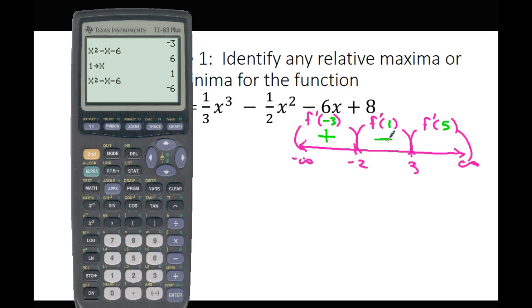Try the last test point using the calculator: store your value, push Second, Enter until you bring your function back, then Enter. For f prime of 5, you should get a positive value. So we have positive, negative, positive across the three intervals.